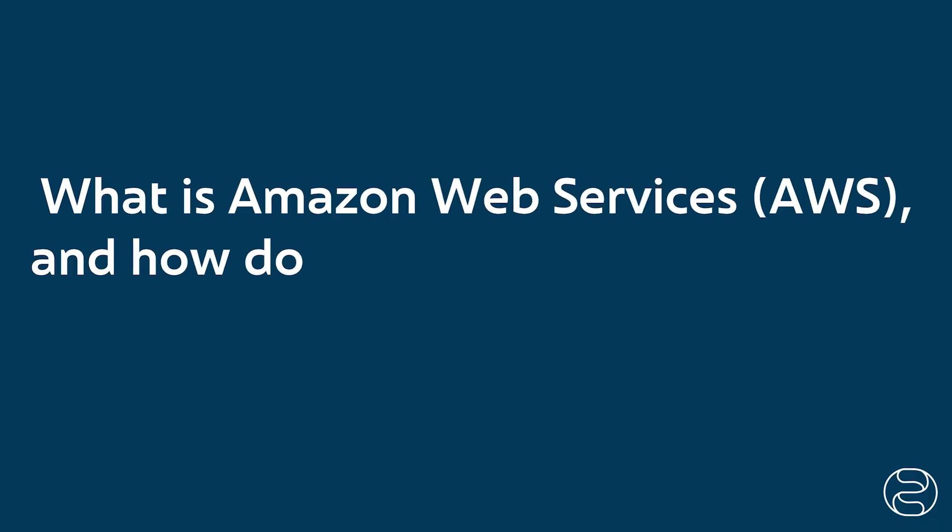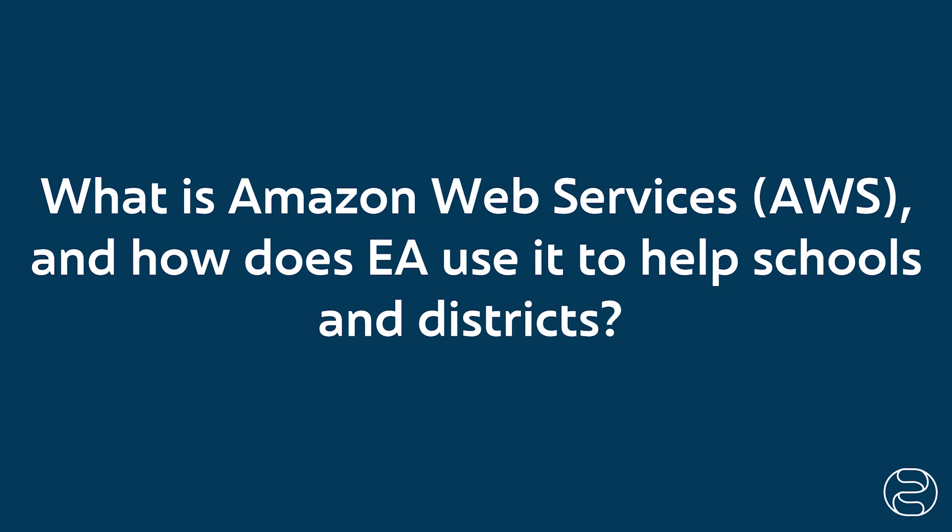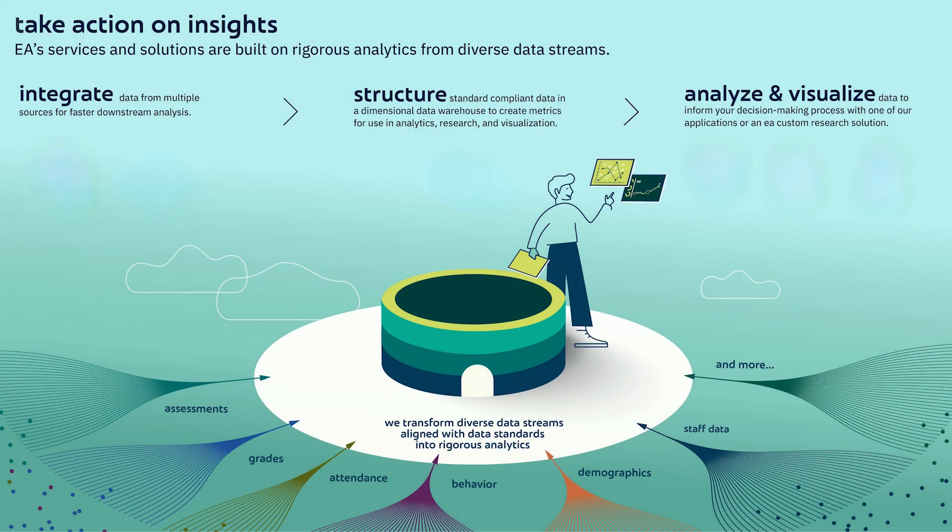My name is Megan Nash and I'm a cloud engineer at Education Analytics. AWS, or Amazon Web Services, is Amazon's cloud platform and it powers the systems we build behind the scenes. So instead of buying and managing physical hardware, AWS gives us the tools to run secure, scalable infrastructure for things like databases, servers, storage, and networking. And EA uses those tools to build our suite of products.